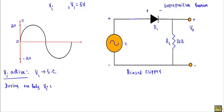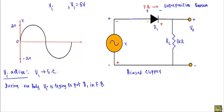During the positive half cycle, the input voltage vi is trying to put diode D1 in forward bias - that means the input voltage is trying to conduct current in the forward direction. During the negative half cycle, this terminal will be negative and this terminal will be positive, so the positive terminal will be connected with the n-side of diode D1 and the negative terminal will be connected with the p-side of diode D1.